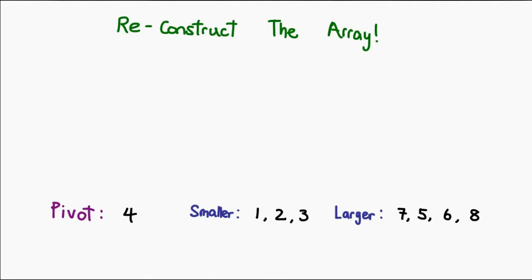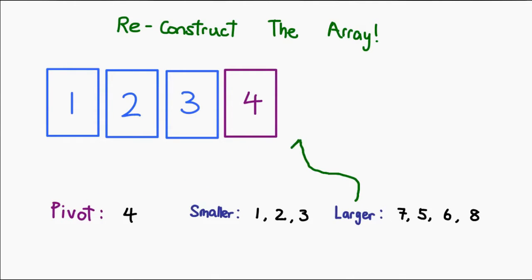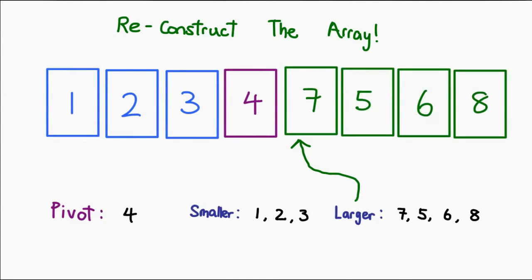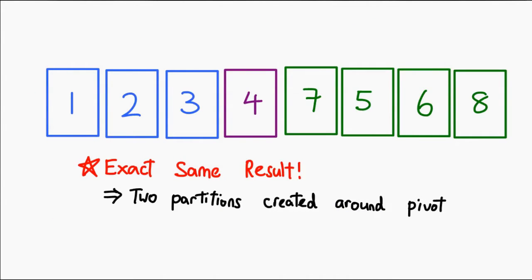What we can then do is reassemble the original array by grabbing all the smaller items and putting them in, taking the pivot and sticking it to the end of that, and then grabbing the larger items list and sticking it to the end of that as well. Essentially, at the end of your first pass, you've created your partitions, just like the other version of quicksort. Similarly, we're just going to apply the same logic and go recursively into each sublist, first going to the left sublist, then to the right sublist.